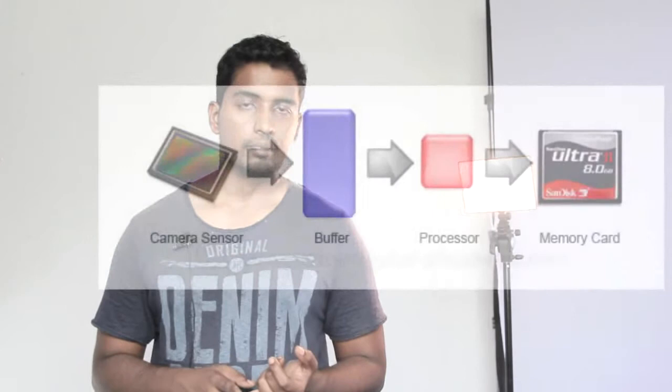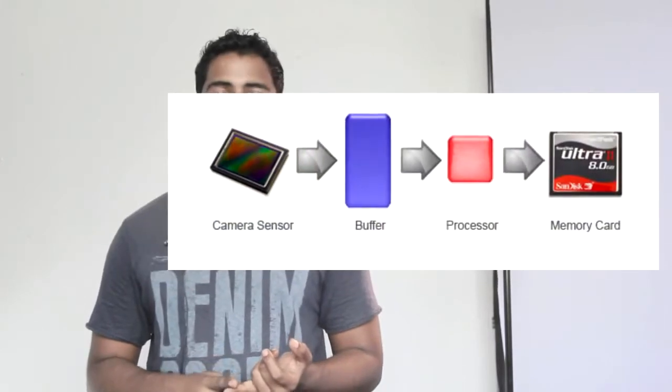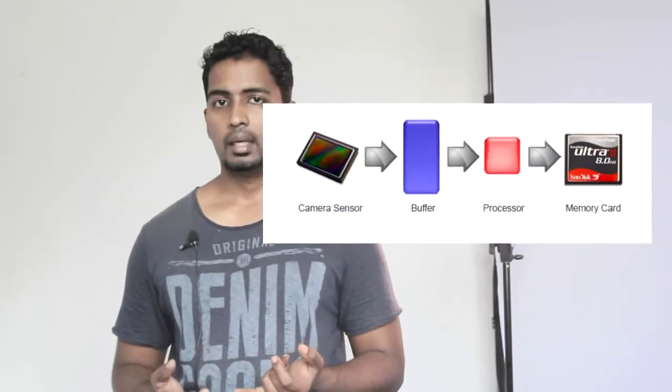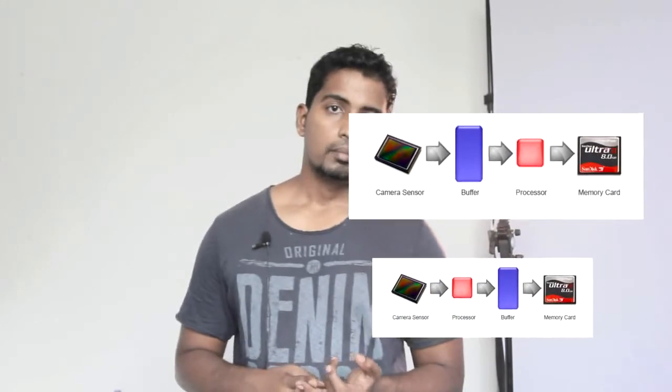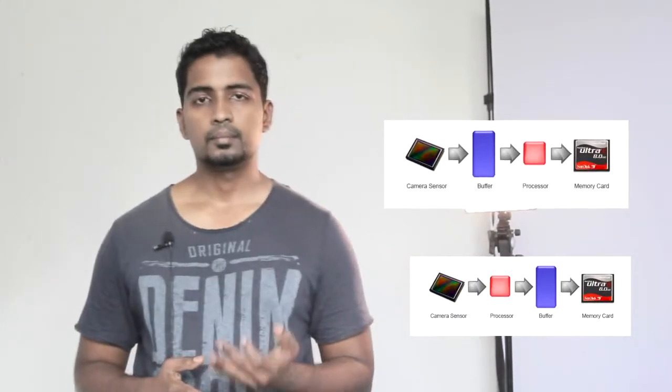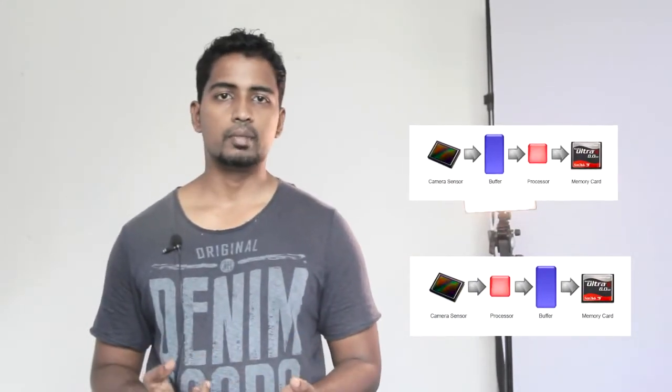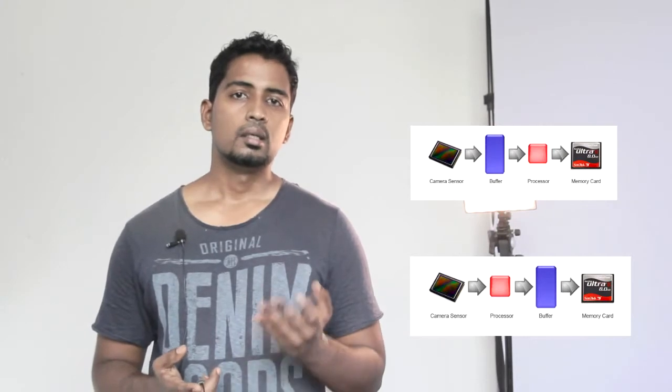There are two different types of buffer. The first is the pre-image processing buffer, where data is directly buffered before processing. The second is the after-image processing buffer, where processed data is written directly to the memory card from the sensor.